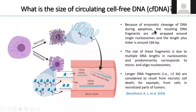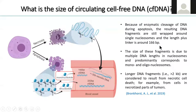The origin of cell-free DNA is apoptosis or necrosis. There is a mechanism to cut DNA wrapped around nucleosomes, and the length is around 166 base pairs. This is the typical size of cell-free DNA.